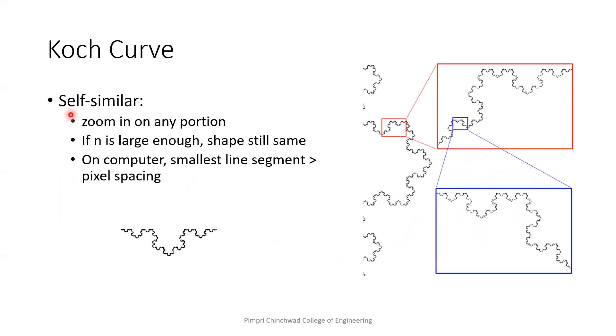So Koch curve is self-similar. What is that? If I zoom in on any portion like this, if n is large enough, we will understand that the shape is still the same. So we are picking up this portion. If we zoom that in, we will get this shape which is having the same shape. Again, if we pick this portion, we will see this is the same shape. On a computer, what is the smallest line segment? Which we can understand that is greater than the pixel spacing.